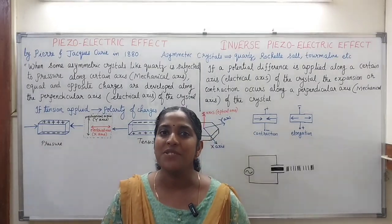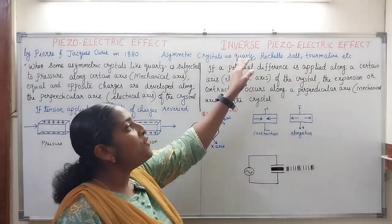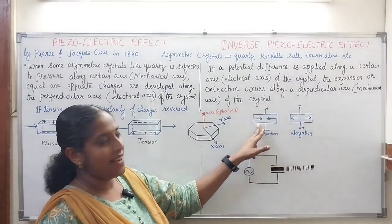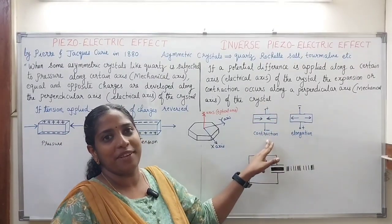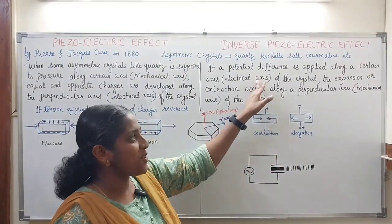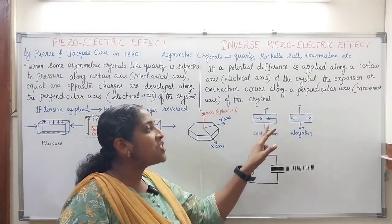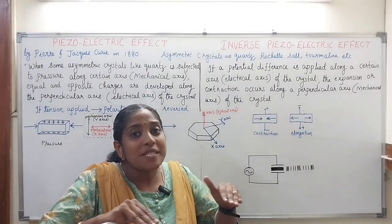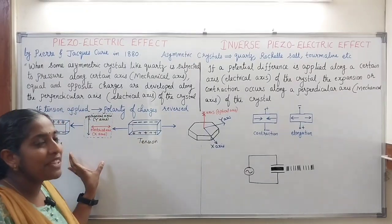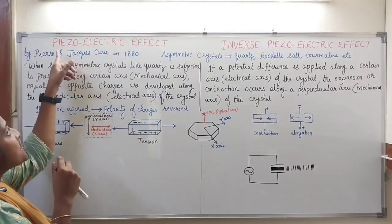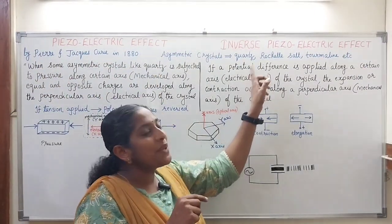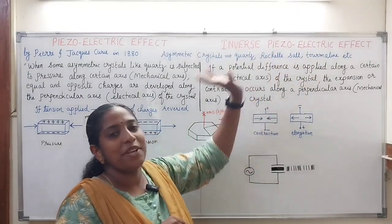Now the inverse of this effect is also true — that effect is known as the inverse piezoelectric effect. In this quartz crystal, if we apply a potential difference along a certain axis, that is the electrical axis of the crystal, then elongation or contraction will happen across the perpendicular axis, which is the mechanical axis. In piezoelectric effect, 'piezo' means to press — pressure is converting into electrical energy, i.e., mechanical energy is converting into electrical energy. In inverse piezoelectric effect, electrical energy is converting into mechanical energy.